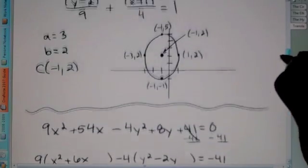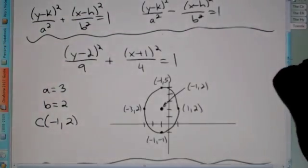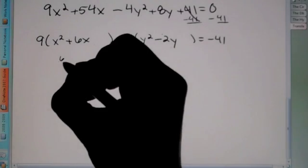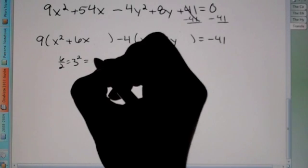So I'm going to factor out the 9, which leaves me with x squared, plus 6x. By the way, I'm just going to go ahead and move that 41 over, like we do with a circle. Move whatever is not connected to x and y over. Here, I'm going to factor out a negative 4. I'm going to factor out negative 4 from just the y's, so that leaves me with y squared, minus 2y, equals negative 41.